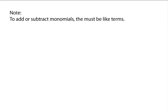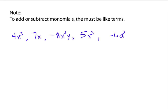To add or subtract monomials, those monomials must be like terms. Like terms means the variable part of the monomial must be exactly the same — same variables and same exponents on those variables. For example, negative 8x cubed y is not a like term with 5x cubed because the variables are different. They have to be exactly the same: same letters, same exponents on those letters.